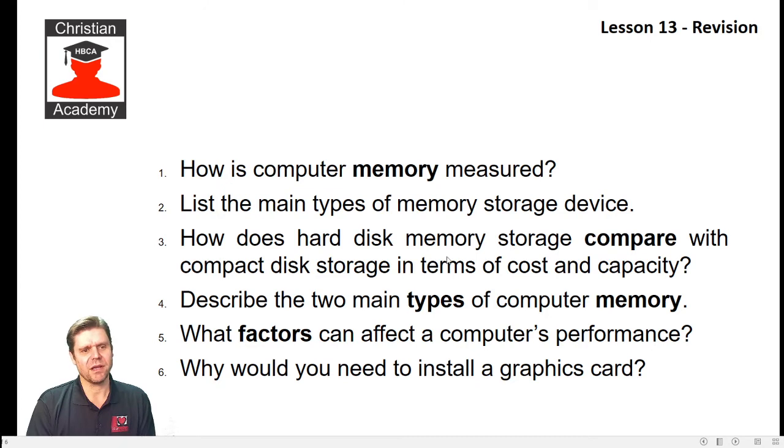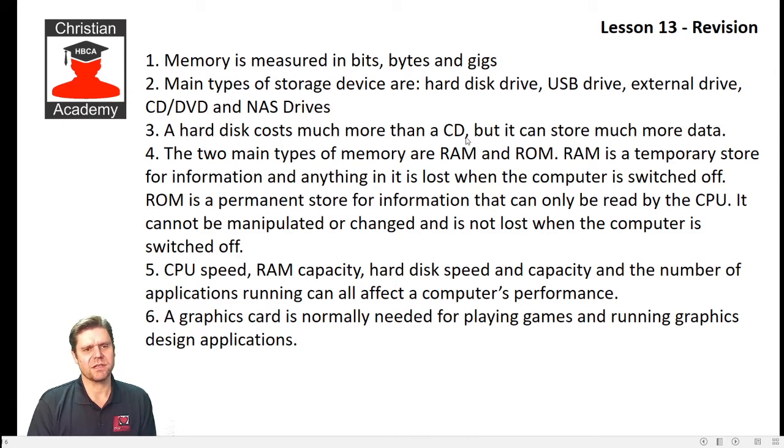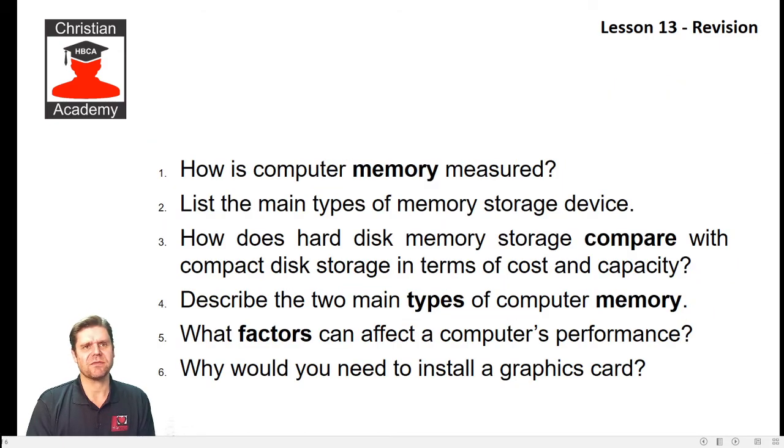How does hard disk memory storage compare with compact disk storage in terms of cost and capacity? A hard disk costs much more than a CD but can store more data. As far as hard drives are concerned, you can get USB drives — I have one that's 2TB. A normal CD stores 700 megabytes, and a standard DVD stores 4.7GB of data. Flash drives are also quite cost-effective — a 64GB flash drive, for example, replaces many DVD or CD disks.